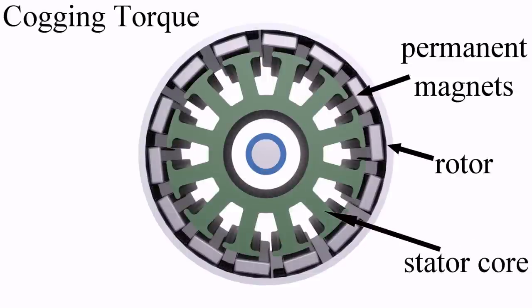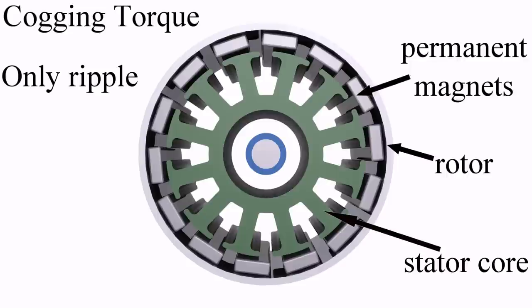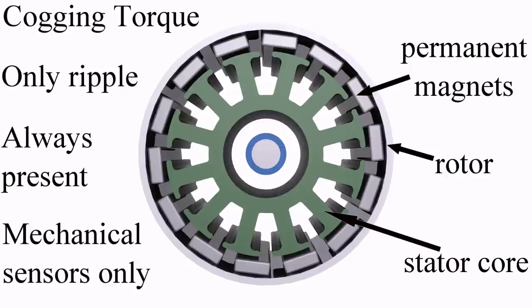Cogging torque, also called detent torque, is when the permanent magnets attract the motor's core. Unlike mutual and reluctance torques, cogging torque cannot make the motor spin continuously, only contributes to torque ripple, is always present, and is only detectable by mechanical sensors.